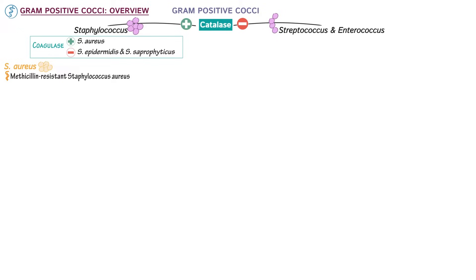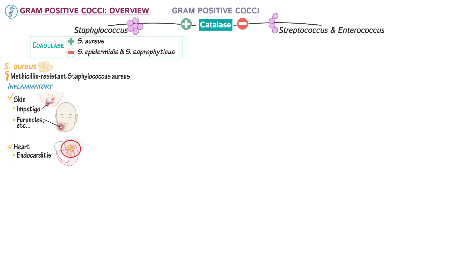Let's summarize some important inflammatory and toxin-mediated infections caused by Staphylococcus aureus. Skin infections include various purulent conditions, such as impetigo, furuncles, and others. Serious organ infections include endocarditis, pneumonia, and infections of the bones and joints that lead to osteomyelitis and septic arthritis.